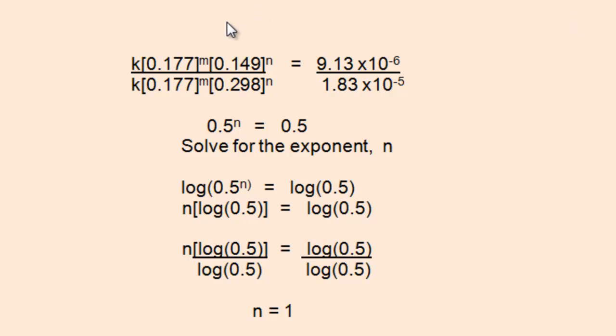Because 0.149 and 0.298 are raised to the n power, we could divide these two numbers to get 0.5. Then if we divide the two numbers on the right side, we also get 0.5. The unknown is n.